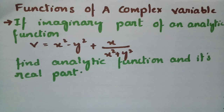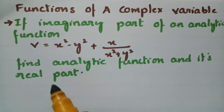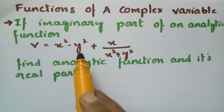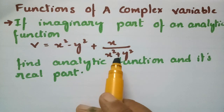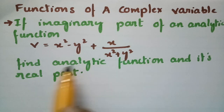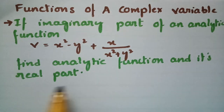In today's video, I am going to solve a problem from functions of complex variables. If the imaginary part of an analytic function v is given as x square minus y square plus x, divided by x square plus y square, then we have to find the analytic function and its real part.